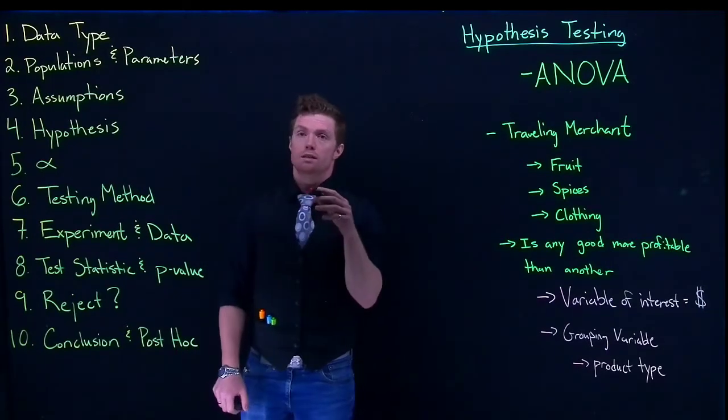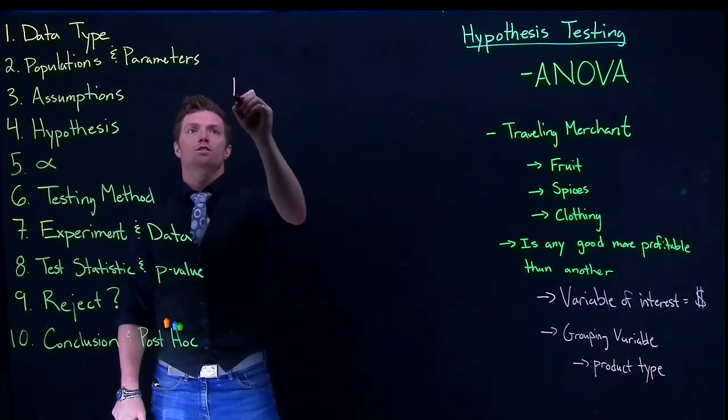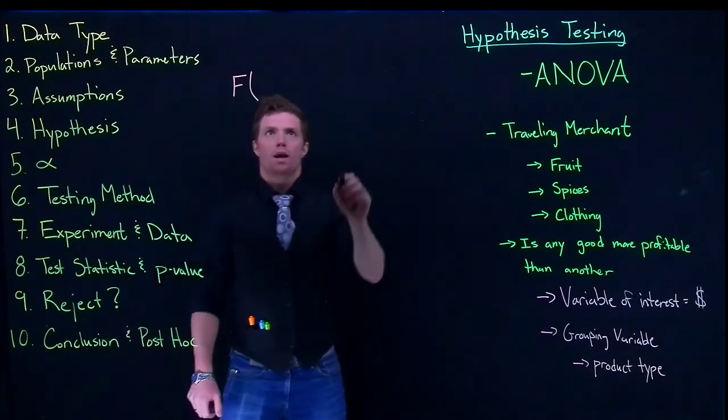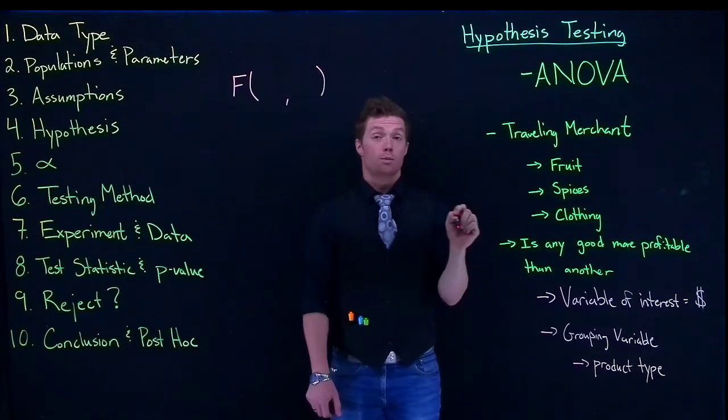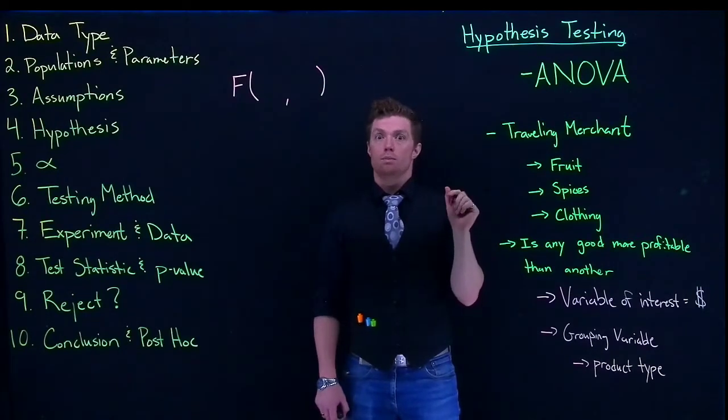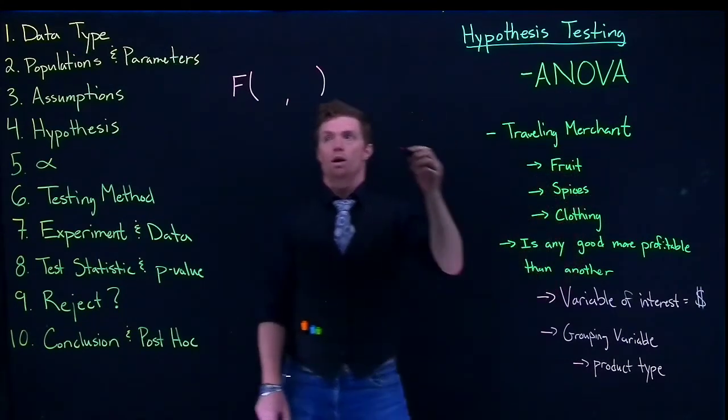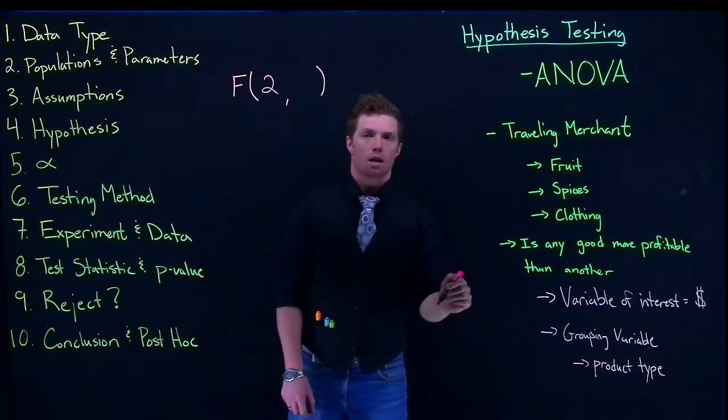So with the ANOVA analysis we are interested in a new statistic called the F statistic. And with our F statistic we actually have two degrees of freedom that we need to report. We need to report the degrees of freedom between groups and that's going to be just the number of groups that we have minus one. So that will be two if we're doing three different groups.